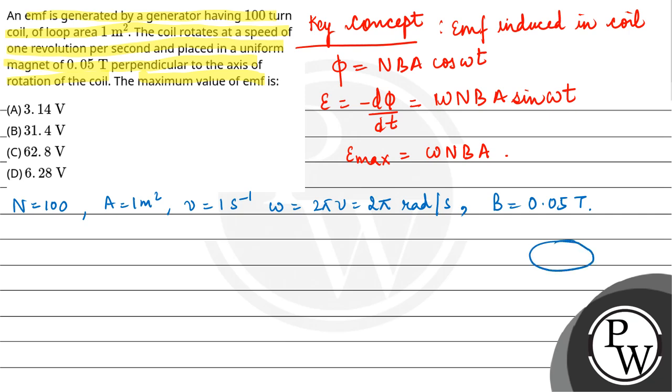The magnetic field direction is perpendicular to the axis of rotation of the coil. The area vector is also perpendicular to the coil.